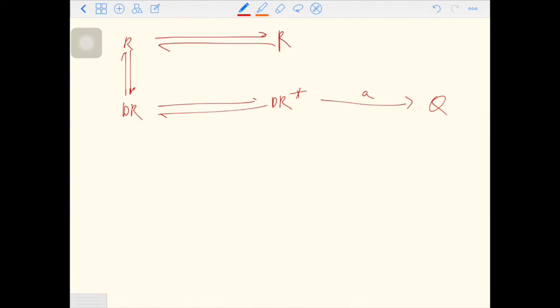And the active form of the receptor also can generate the response. So here we have R star. R star will have a response. The intrinsic activity is the same as that of DR star. And there is an equilibrium between R star and DR star.